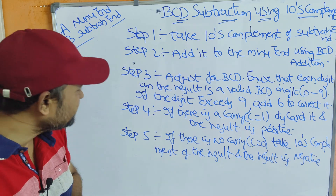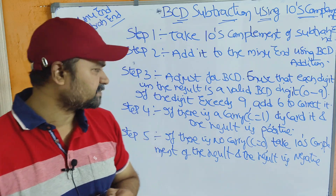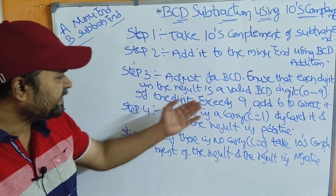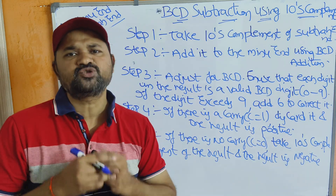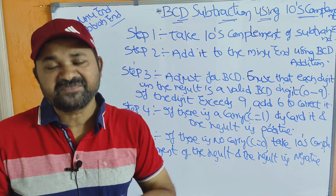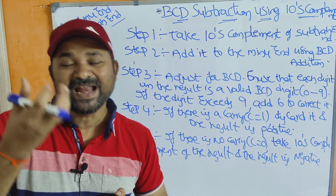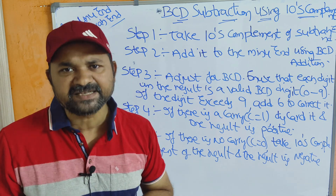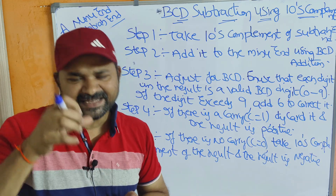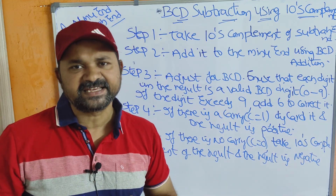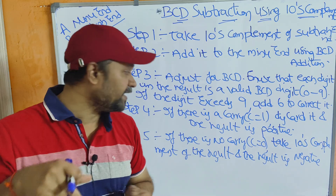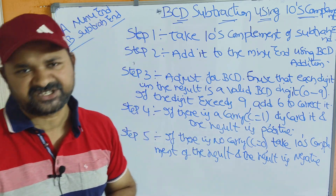Step 3: Adjust for BCD. Ensure that each digit in the result is a valid BCD digit, that is in the range of 0 to 9. If the digit exceeds 9, add 6 to correct it. After getting the BCD sum, we check whether each digit is a valid BCD digit. If the digit exceeds 9, it is an invalid BCD digit and we add 6 for error correction.